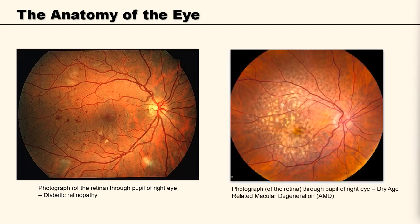In this image we can see another common condition affecting the eye: dry age-related macular degeneration. It is more common amongst the older population, with a worldwide prevalence of about 9% and accounting for the main cause of blindness in working-age people. Here we can see it is largely affecting the macular region. As predicted, because it affects the macula, we expect that these individuals would experience central vision loss.